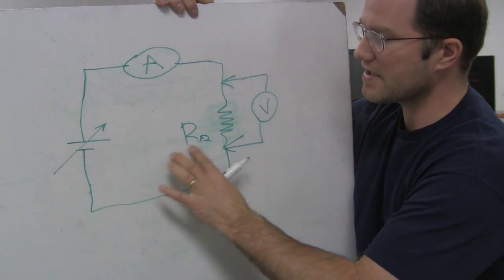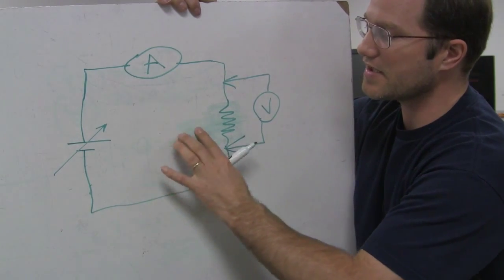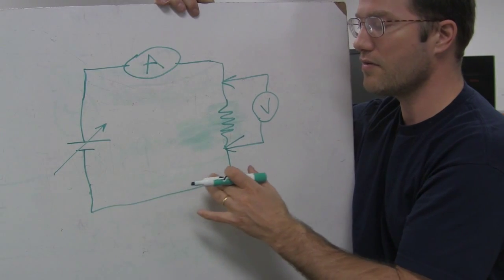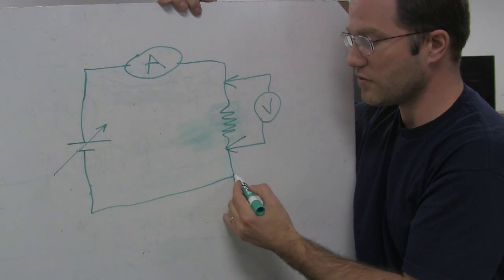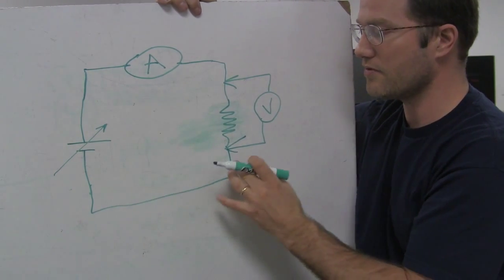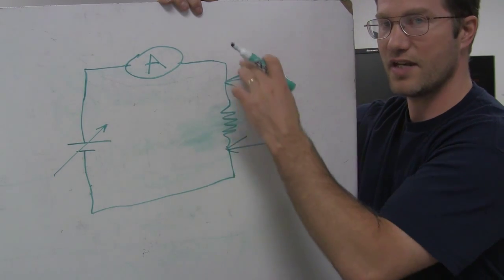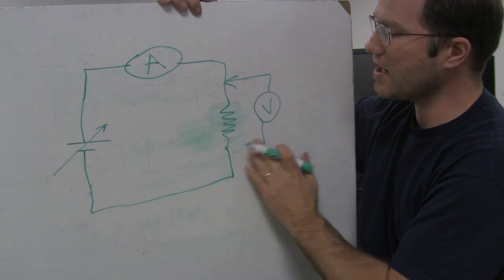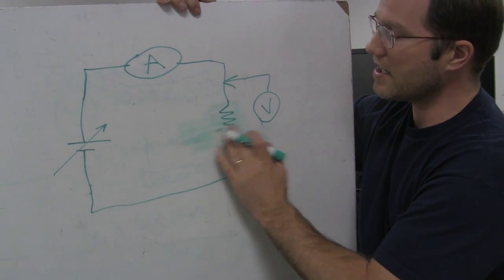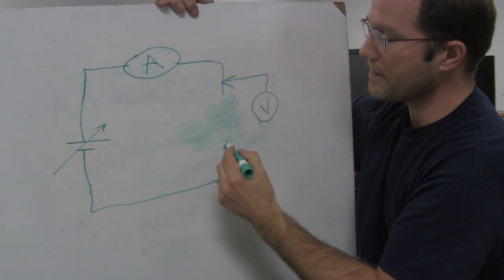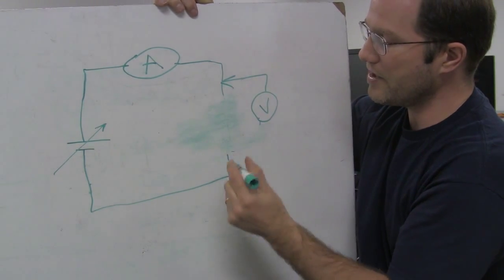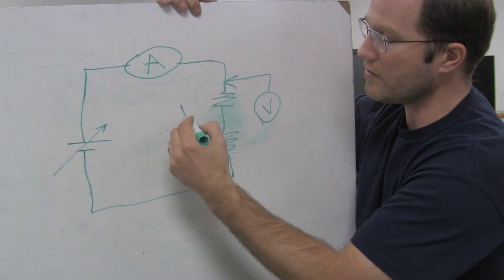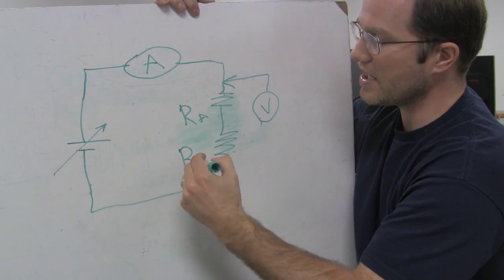Now let's talk about these in series. When resistors are in series, it means the current can only go one direction — it has to go through one resistor and then through the next; there's no branch in the current. What I can do is take my resistors and put them in a row: one resistor there, one resistor there — resistor A and resistor B.